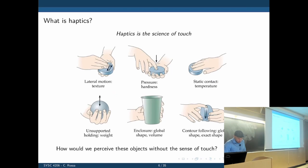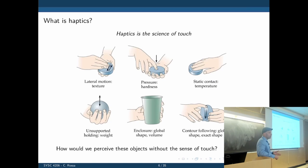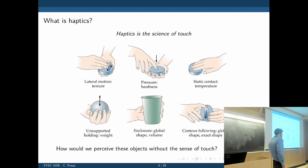Whenever we interact through a teleoperation system in a virtual or physical environment, our sense of touching the environment is gone. We use the sense of touch for most of these tasks, especially in surgery. If you take an object, we can use touch to detect texture when you slide your fingers on it, pressure when pressing, static contact for temperature, weight, shape and volume, and contour of the object.